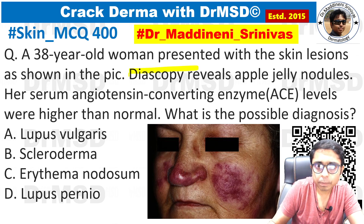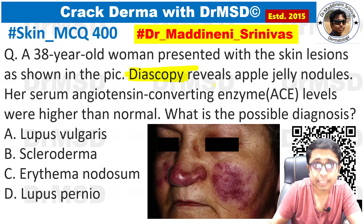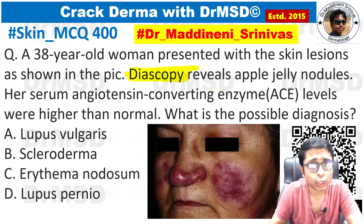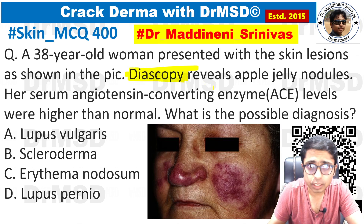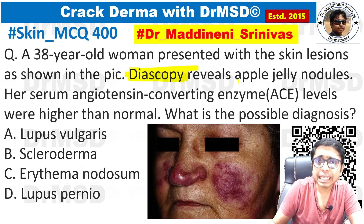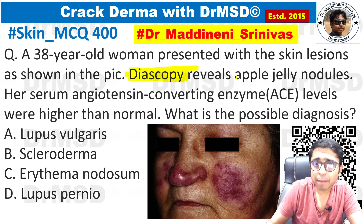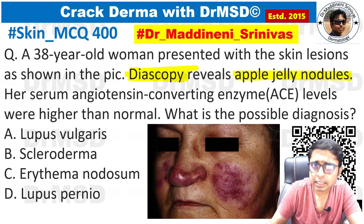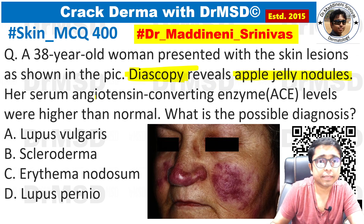Diascopy — that is, application of pressure with the help of a glass lid over the skin — is called diascopy. It is also called vitropression. This reveals apple jelly nodules. This is one clue which is given.